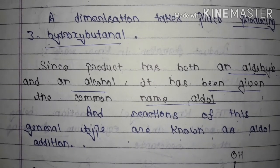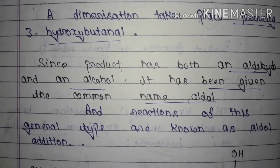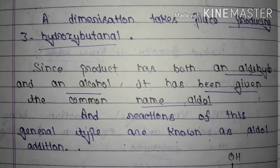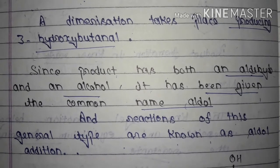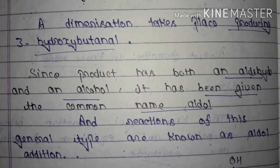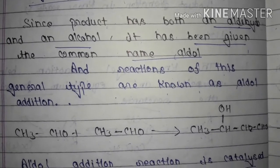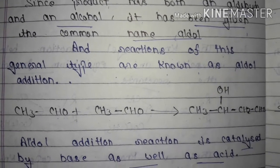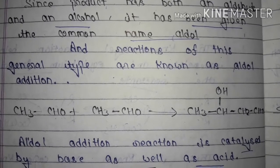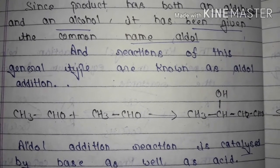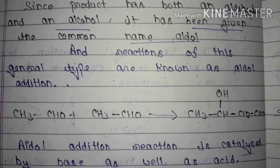That is, the product can be an aldehyde as well as an alcohol. Because two functional groups are present in the product, the common name given is 'aldol'. This will be better understood through the mechanism and reaction. In the introduction we need a little theory, and once you know the reaction well, the mechanism and theory will also become clear.